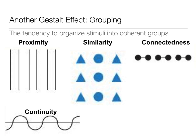Another grouping principle is connectedness. In the vase and faces image, we also had connectedness and symmetry both contributing to why you can see either image and switch back and forth between them. With connectedness, we're more likely to see three barbell shapes than six dots with three lines, because we group the connected elements together as distinct objects rather than seeing the lines and dots as coincidental.